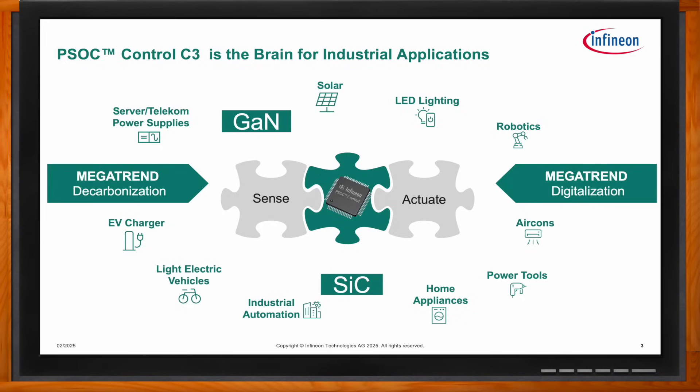In the power conversion and motor control space — for example, solar inverters, server and telecom power supplies, EV chargers, light electric vehicles, home appliances, power tools, HVAC systems, and industrial drives for automation — the brain of the system needs to sense the analog world and act with connected systems. More and more, manufacturers are adopting wideband gap power electronics to address decarbonization and digitalization trends.